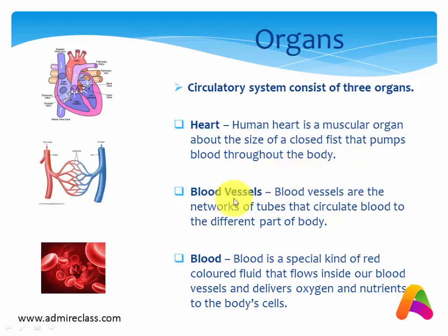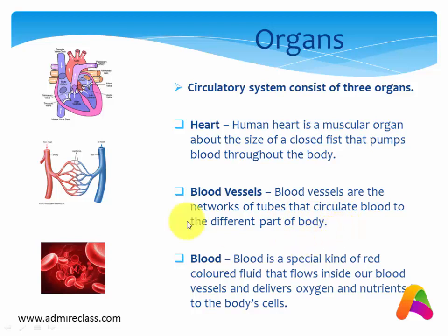The next one is blood vessels. These are the networks of tubes that circulate blood to the different parts of the body. So the main work of blood vessels is to circulate blood to the different parts of our body.